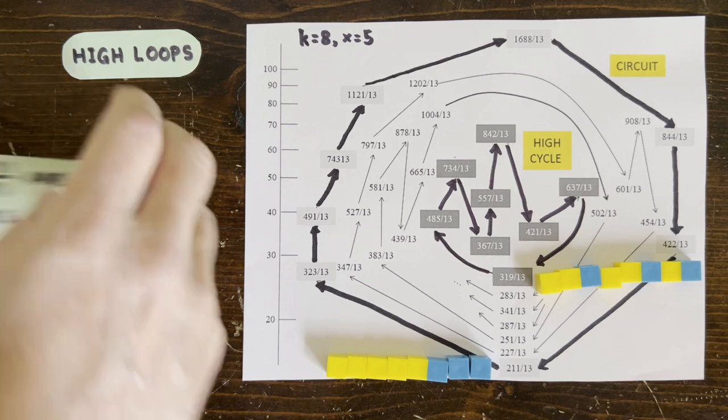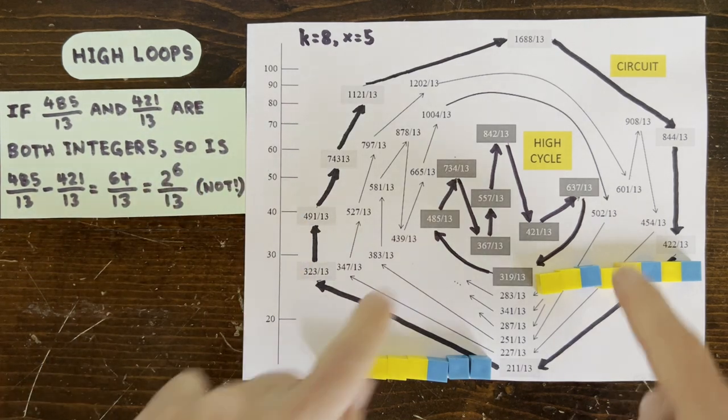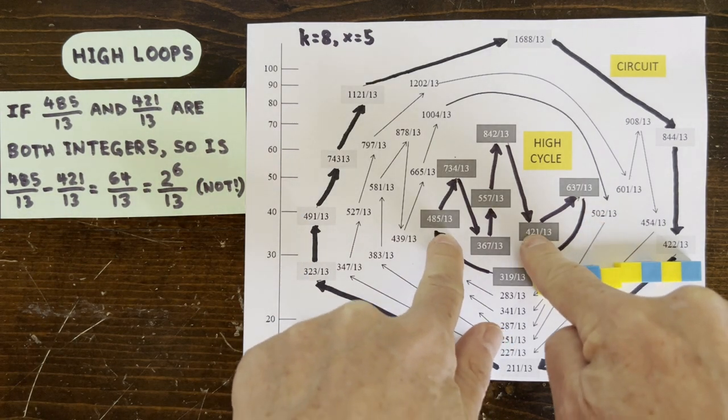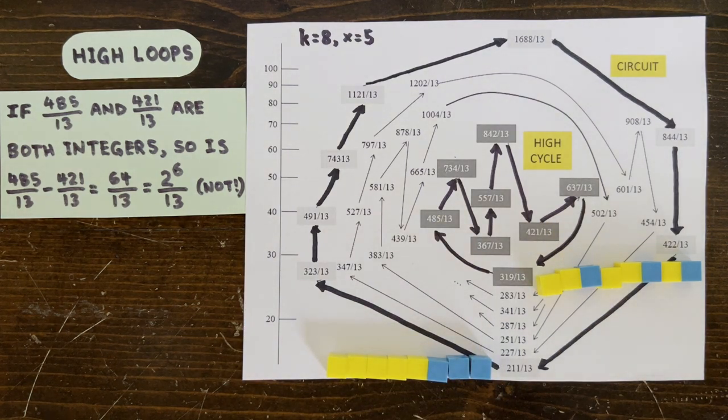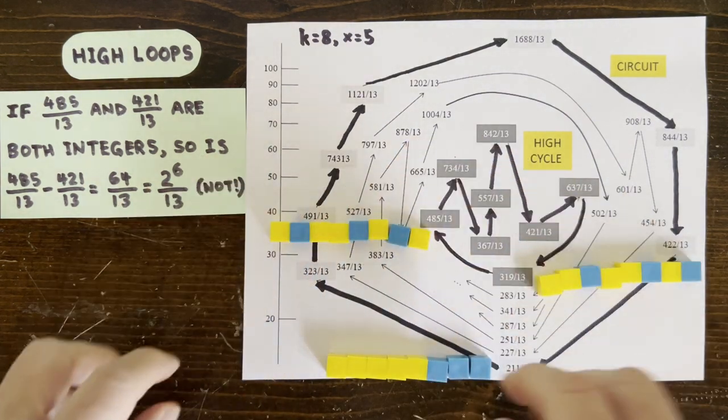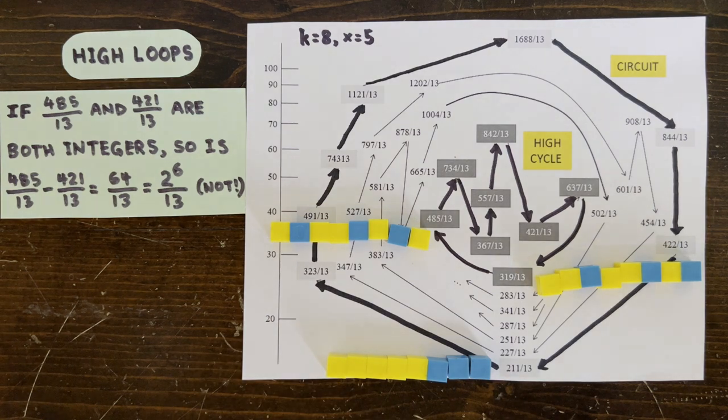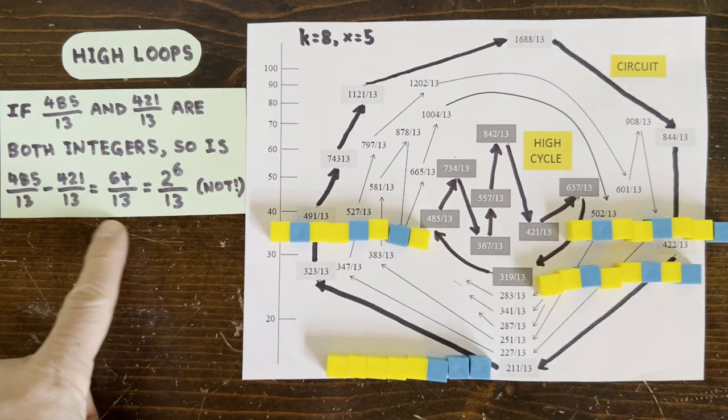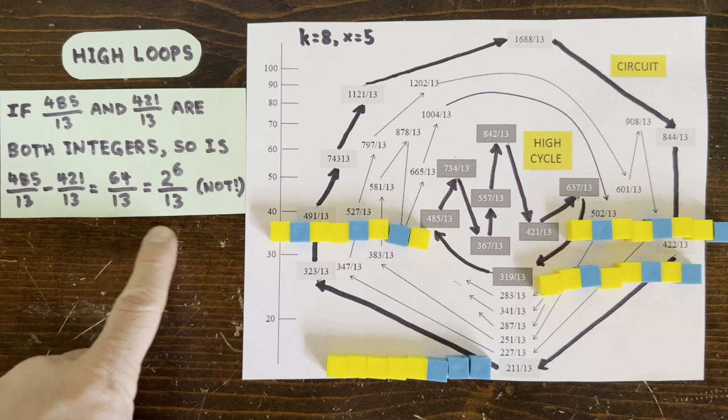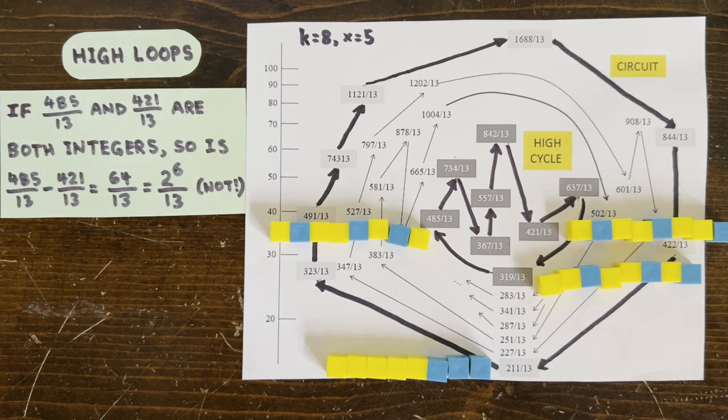We picked two members of the high loop, these two, and we said if they're both integers, then their difference must also be an integer. But here, their difference is 485 over 13 minus 421 over 13, which is 64 over 13, which is 2 to the 6th over 13, which in fact can't be an integer because there's no 13 in the numerator to cancel out the denominator.